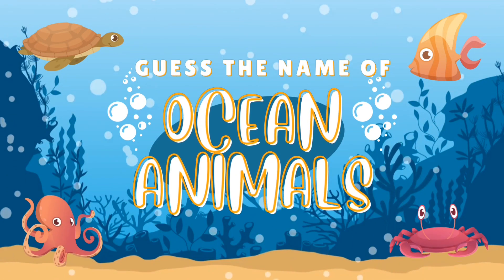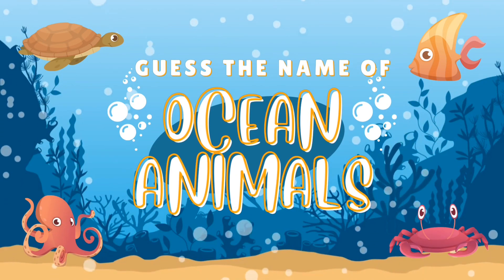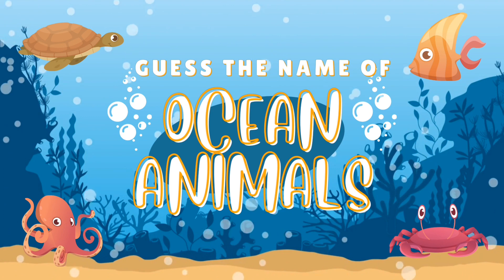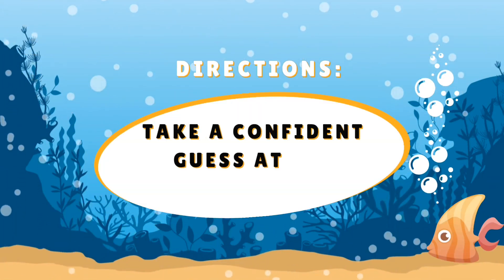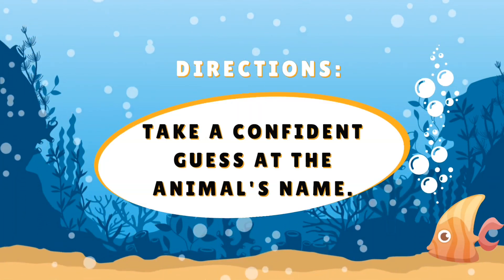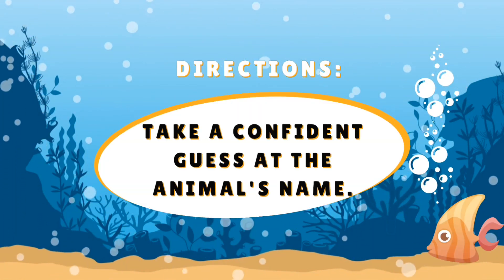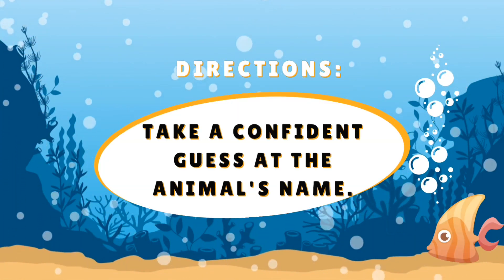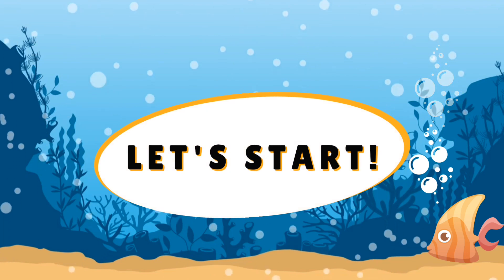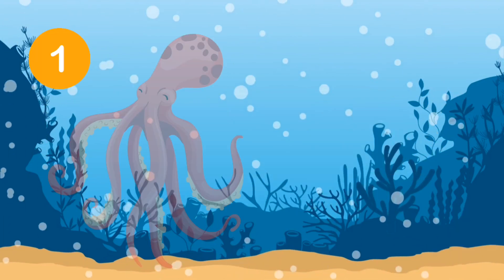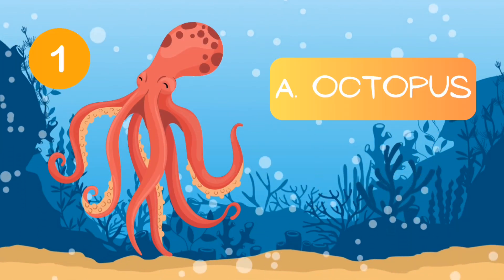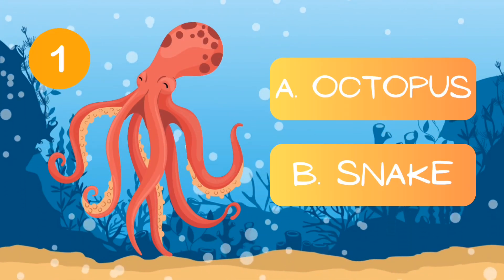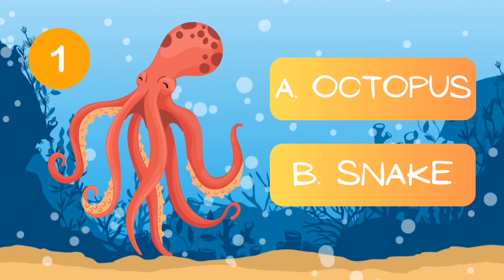Guess the name of ocean animals. Directions: take a confident guess at the animal's name. Let's start: a) octopus, b) snake.